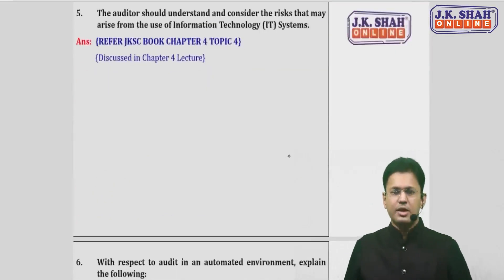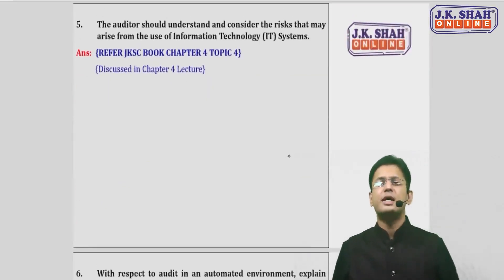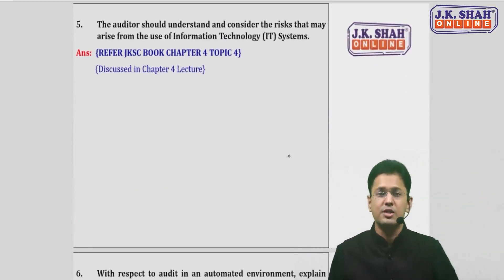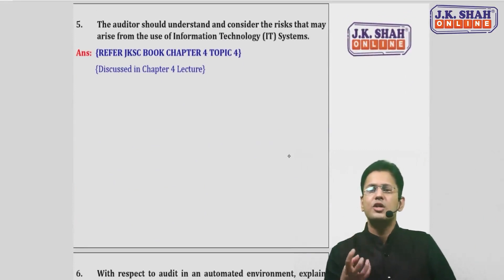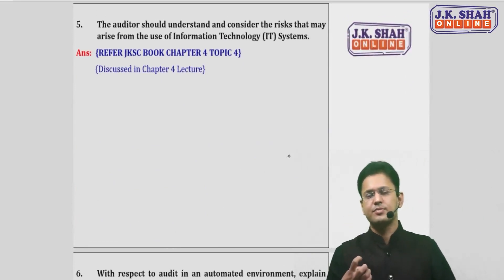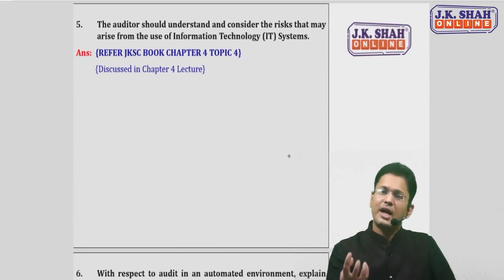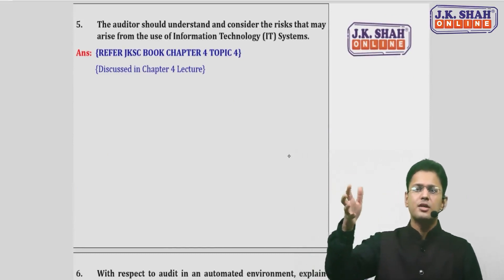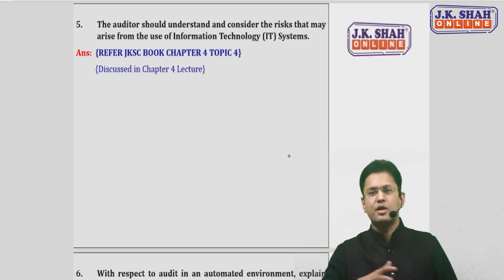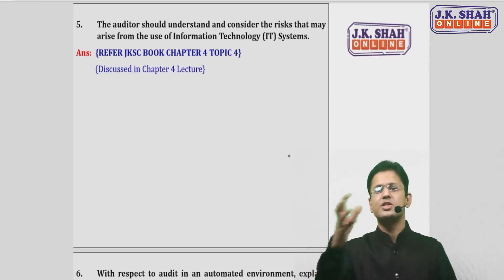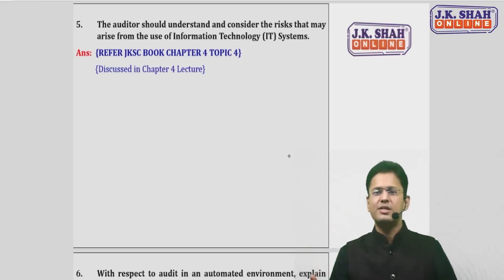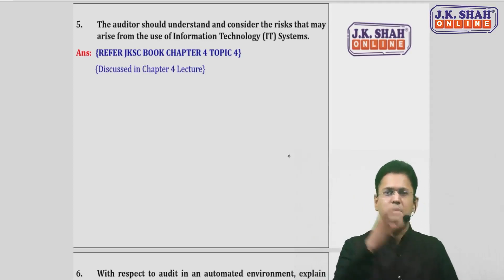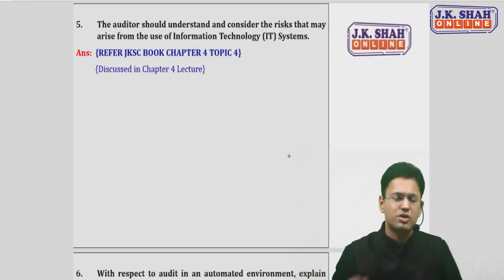The next question on IT risks has already been covered in Chapter 4 revision lecture. As a reminder: IT risks include unauthorized access, unauthorized changes in the master file, unauthorized changes in the system and program, inability to access the data, and failure to change the data. Those were the IT risks covered in the revision lecture of Chapter 4.